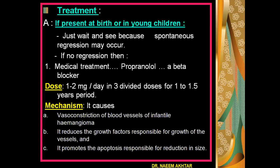Treatment: if hemangioma is present at birth or appears in young children, we may wait and see because spontaneous regression may occur in the majority of lesions. If there is no regression, it can be treated by medical or surgical treatment. The medical treatment consists of propranolol, which is a beta blocker; the dose recommended is 1 to 2 mg per day in three divided doses for one to one-and-a-half years. Propranolol may cause vasoconstriction of blood vessels of the infantile hemangioma, reduces growth factors responsible for vessel growth, and may promote apoptosis responsible for reduction in size of the hemangioma.